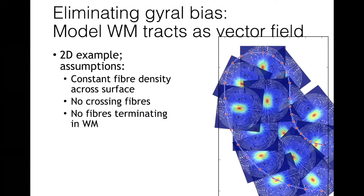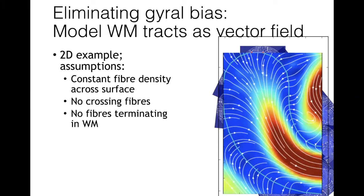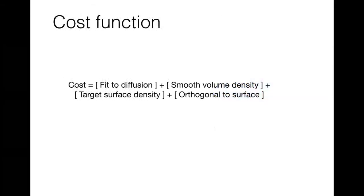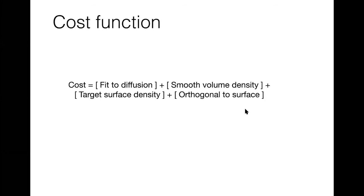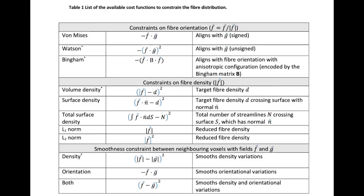Going back to our gyrus, you can have a bunch of these dipoles dispersed throughout the gyrus. That gives you a continuous divergence-free field, which you can fit to the diffusion data by fitting the three parameters a, b, and c per dipole. You need a cost function to fit anything, which could include fitting to the diffusion data, having a smooth volume density or a target surface density — for example, each volume of cortex should have equal density — and you can also add an anatomical prior for the field to be orthogonal to the surface. All of these cost functions have been implemented and the code is available.